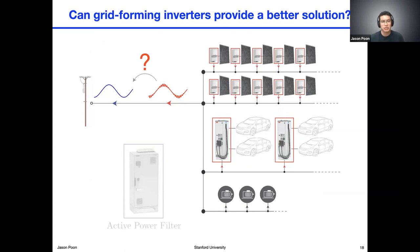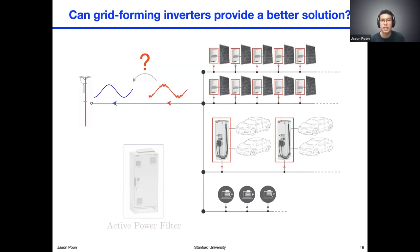So where am I going with all this? A question that we asked, thinking about functionalities that grid-forming inverters can provide that weren't possible with conventional technologies — we asked ourselves: could inverters themselves somehow filter their own harmonic content and eliminate the need for an active power filter? Maybe not necessarily a single inverter, but in aggregate, if we could somehow collectively control all of these inverters in some intelligent way, could we eliminate the need for this very costly device?